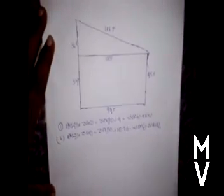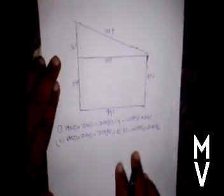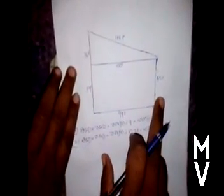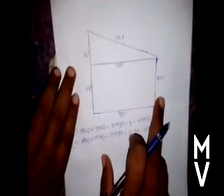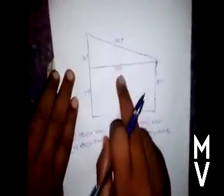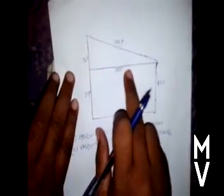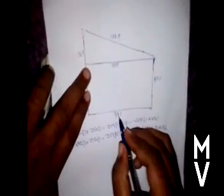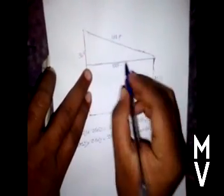We are going to try this one. We can try, you want to try. First, we can use E3RB. This is 90. This is 90.